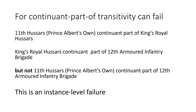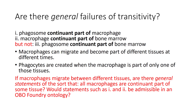This suggests the British Army was not well organised — whole brigades were losing infantry. But can we find examples in the realm of general biological truth rather than just accidents of history? A phagosome is a continuant part of a macrophage; a macrophage is a continuant part of bone marrow, but it is not the case that the phagosome is a continuant part of bone marrow, because macrophages can migrate. That's a real biological problem if we assume that continuant part of is transitive.